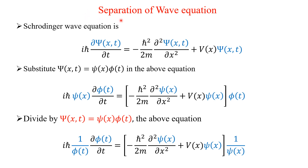Now we will see the separation of the wave equation. The Schrödinger equation is: i h-bar partial derivative of capital Ψ(X,T). This capital Ψ represents the wave function depending on both X and T. We take the partial time derivative of this wave function, which is equal to minus h-bar squared over 2m times (∂²ψ(X,T)/∂X²) plus V(X)ψ(X,T). Here V(X) depends only on position, not on time — that assumption we are taking.